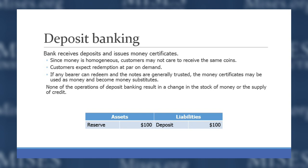If customers expect redemption on demand, and if any bearer of those notes can come in and redeem for the amount of gold depicted on the note, then those little slips of paper themselves could be used as the widely accepted medium of exchange in the economy. So instead of using gold coins, everybody has the bank notes. But these conditions have to be met — people have to trust that the bank will be able to redeem their deposits, and customers have to expect redemption at par on demand.